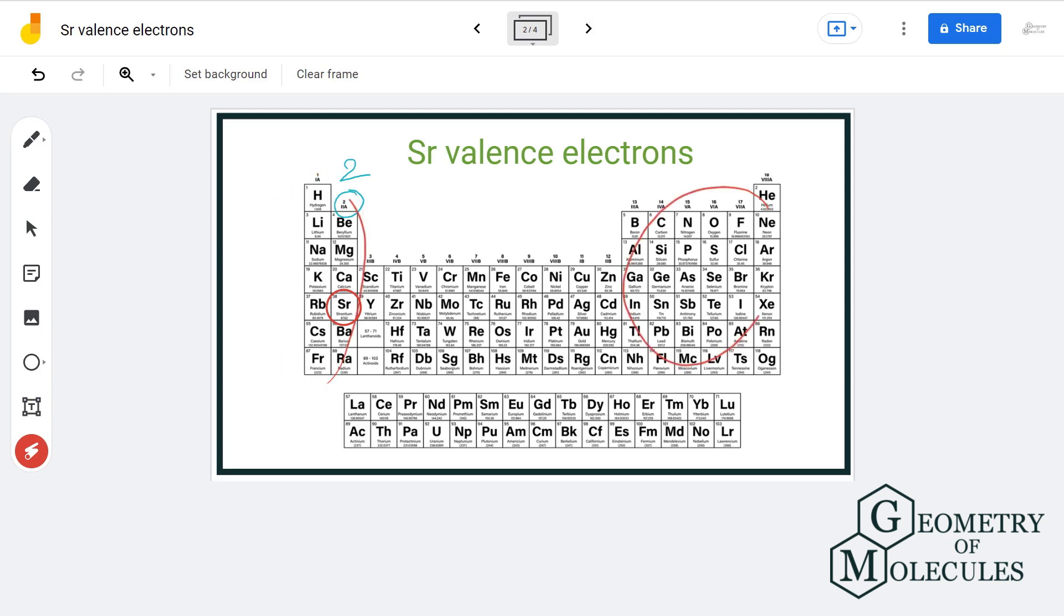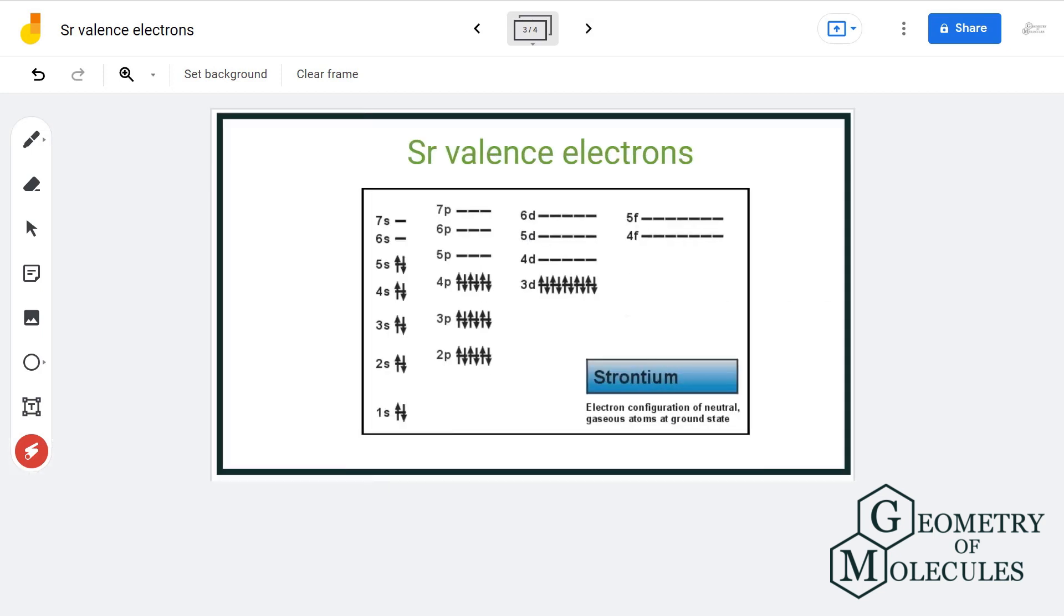The other way is by writing down its electronic configuration. For that, we will determine the electrons that an atom has and then arrange them in increasing order of energy in the atomic orbitals.